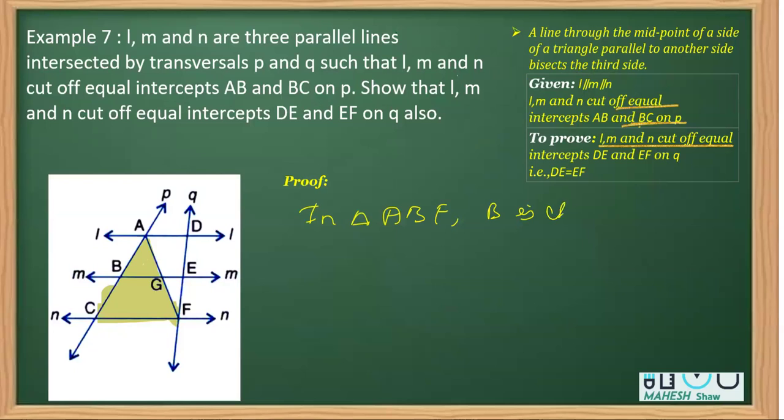You have B is the midpoint of AC and this BG line parallel to CF. Now why I'm writing this BG parallel to CF? Because M is parallel to N. We have M, parts of parallel lines are parallel.